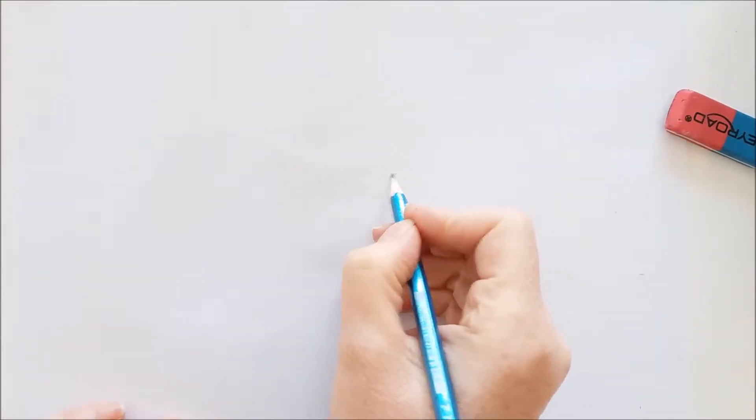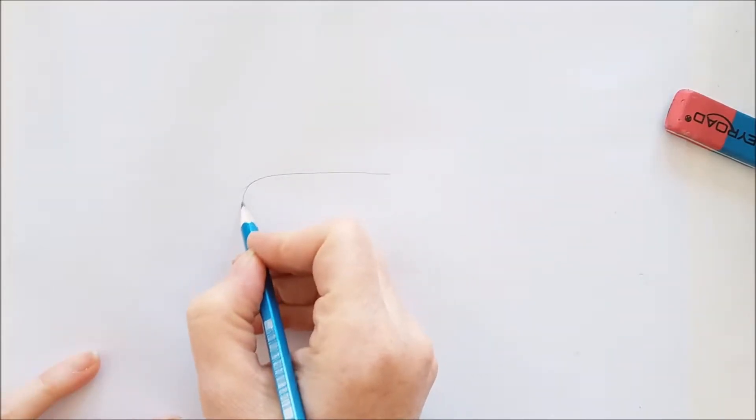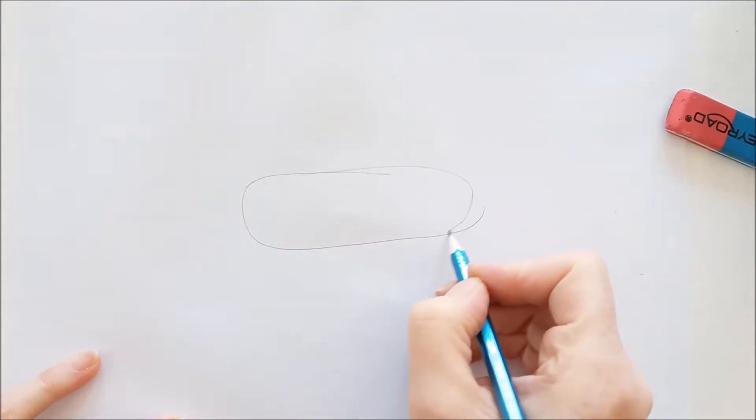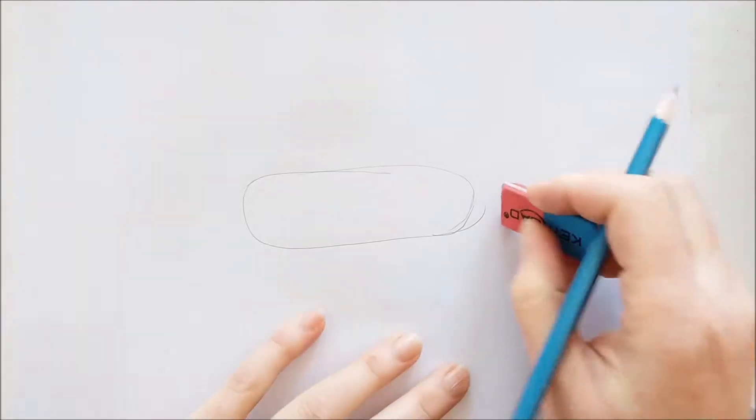Hello everyone. Today we are going to be drawing a little wiener dog and I'm starting by drawing an oval in the center of my piece of paper.